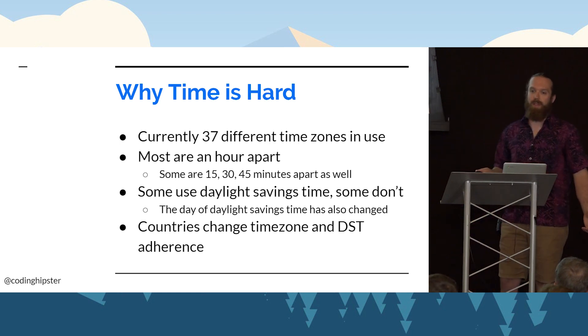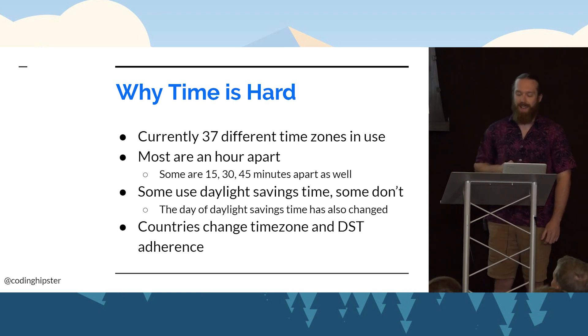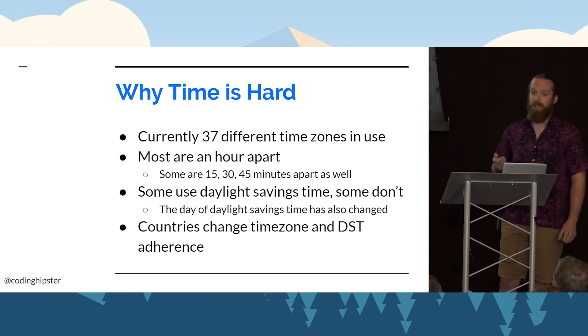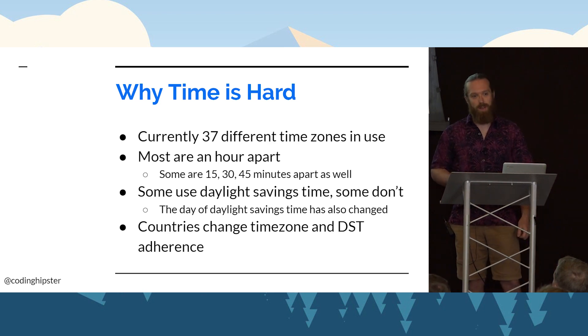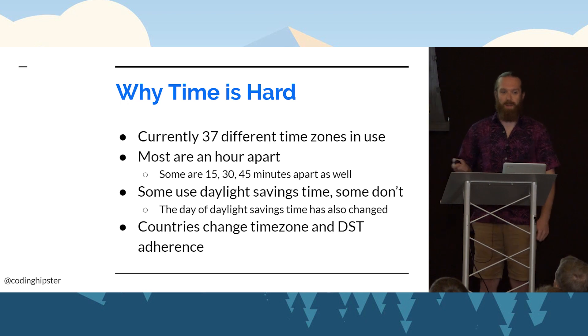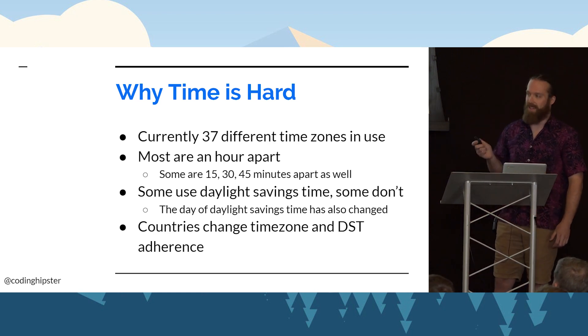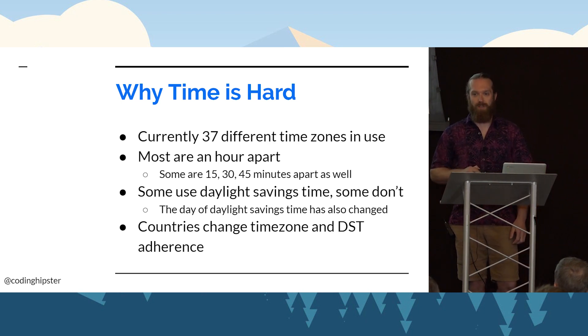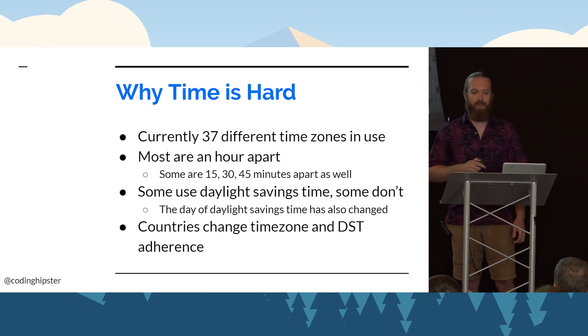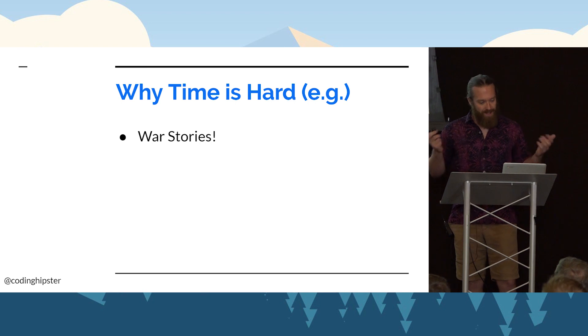So why is time hard? For starters, there are 37 different active time zones in the world. Now there's only 24 hours around the world, so that's a little bit of a head-scratcher. There are time zones that sit in 15, 30, and 45-minute intervals. You also have some areas that respect daylight savings time, some that don't. You have areas inside individual states, like the Navajo Nation, that respects daylight savings time while the state they're in does not. Another interesting thing is over the last 75 years, there have been eight different countries that have changed their time zone at some point or another.